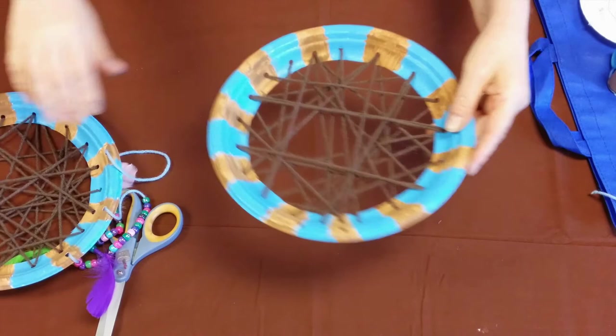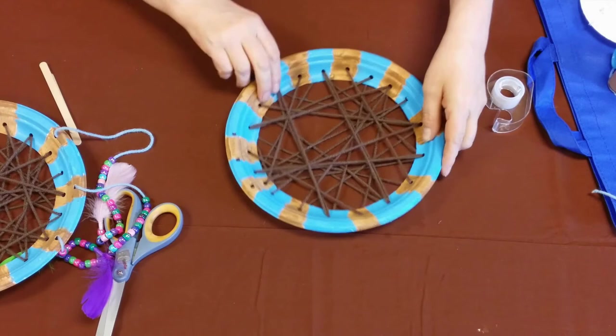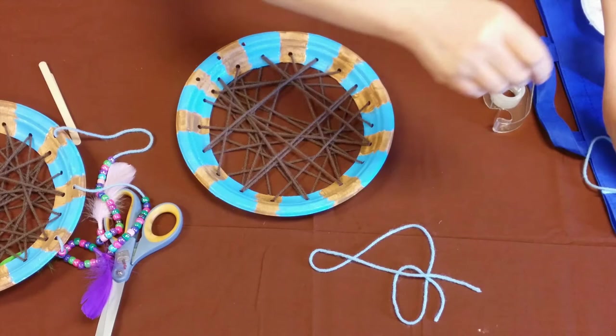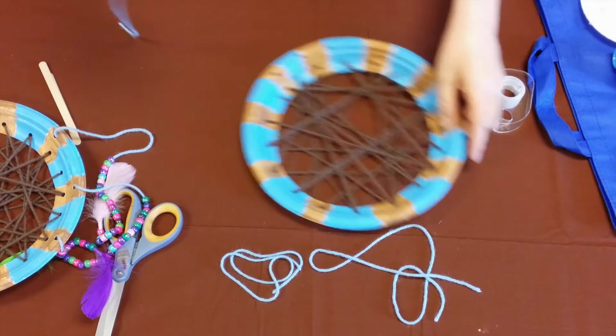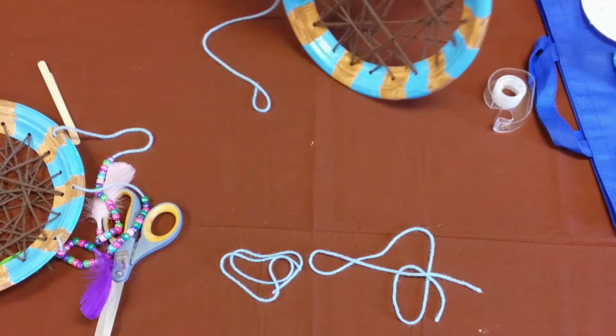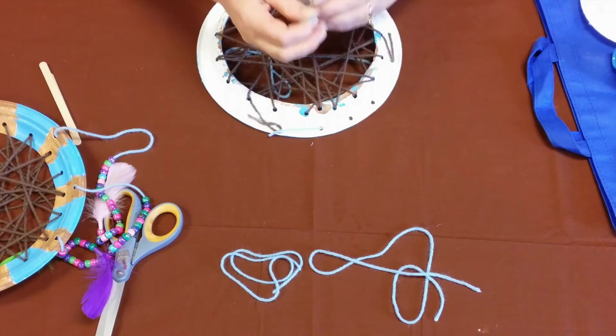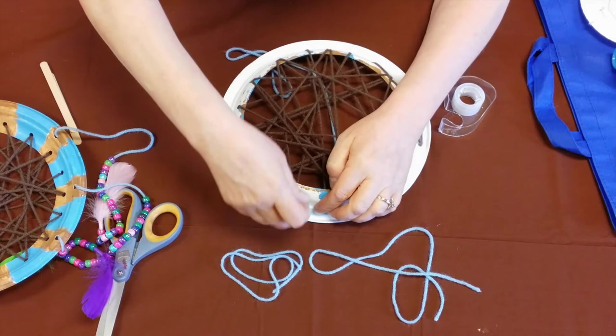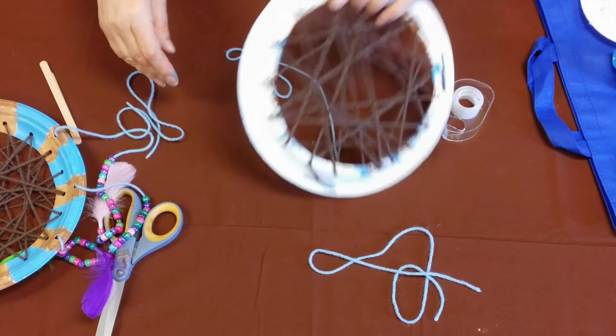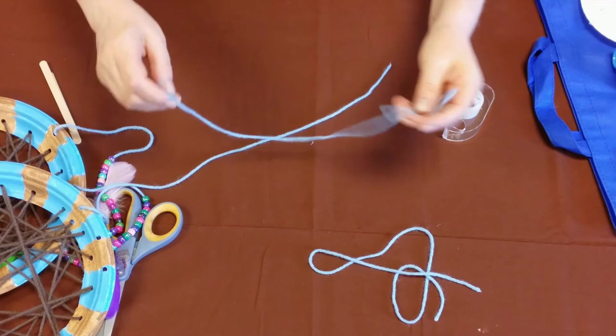You see these three holes down here that are on the outside? I meant to tell you this earlier, but the feathers and the beads that hang down actually go through those. So when you're weaving the inside, you do not use these three holes. Okay, so now I'm going to get the blue thread out, or whatever color I gave you - that's the shorter of the three. I'm going to put it through that hole and tape it down to the back.